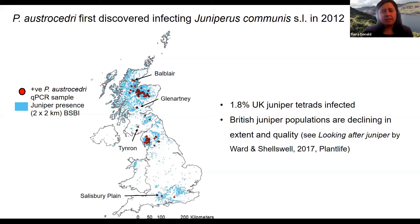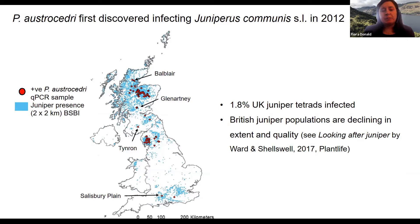Although 1.8% of UK juniper tetrads infected doesn't sound like very many, unfortunately where there's most infection is in the real juniper strongholds in the Cairngorms and the Lake District. This is a real concern because British juniper populations are already declining from other impacts, and it's a really important species for biodiversity because it supports so many generalist and specialist species and is a component of so many different habitats. It's also one of our few native conifers that we use in native woodland creation.